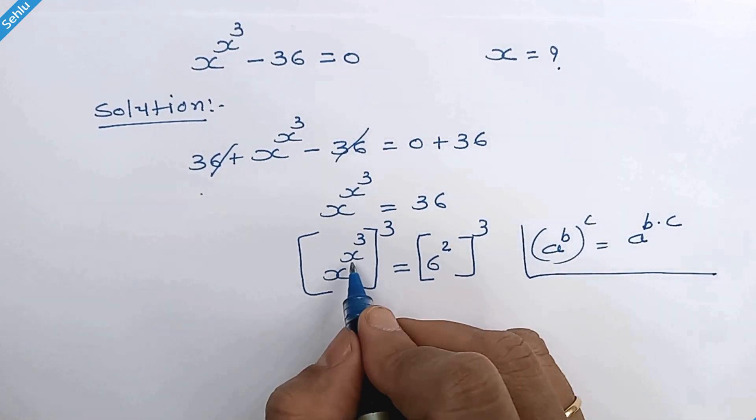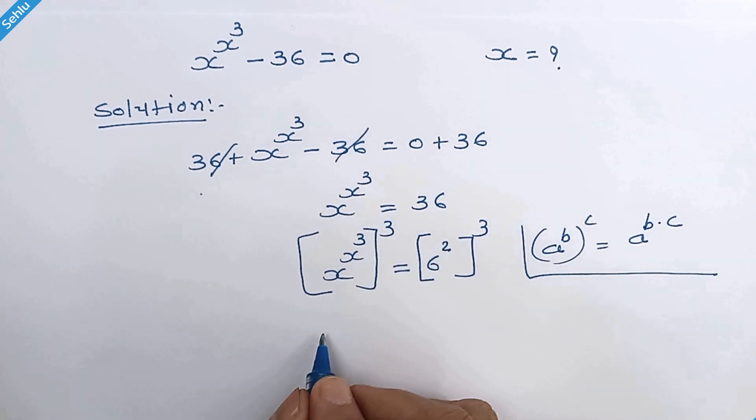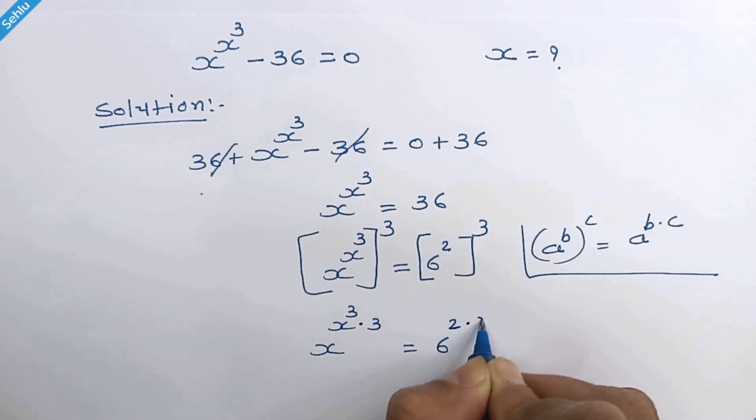So here we can multiply this x cube with 3 and 2 with 3. It will be x raised to x cube times 3 equals 6 raised to 2 times 3.